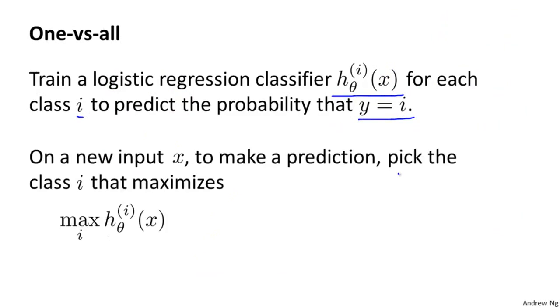Finally, to make a prediction when we're given a new input x and we want to make a prediction, what we do is we just run all three of our classifiers on the input x and we then pick the class i that maximizes the three. So we basically pick whichever one of the three classifiers is most confident or most enthusiastically says that it thinks it has the right class. So whichever value of i gives us the highest probability, we then predict y to be that value.